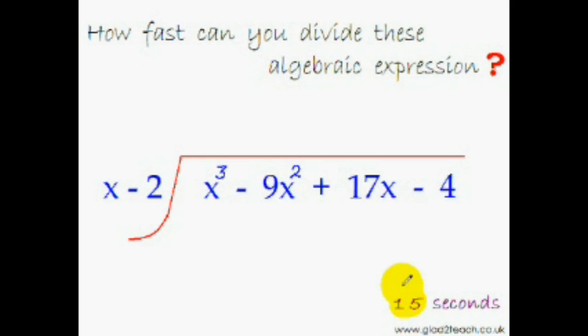Your time is up. Let me do it. x³ divided by x is x². That's the first term of the answer. Put plus 2 over here. Plus 2x² minus 9x² is minus 7x², so I'll put minus 7x, and this is the second term of the answer. Plus 2 times minus 7x is minus 14x. Minus 14x plus 17x is plus 3x, so I'll put plus 3, and this is my final answer.